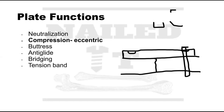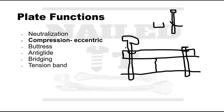If you put a screw in the eccentric part of the plate, as the screw head goes down and engages with the plate, it moves the plate and compresses the bone. As the screw goes down flush with the bone, the fracture gets compressed because the plate moves in that direction. You have the plate rigidly fixed on one side and eccentrically place screws on the other side of the fracture to get compression through the plate. That is a plate being used in compression mode.